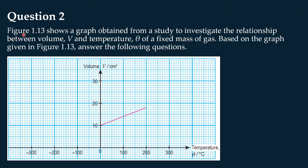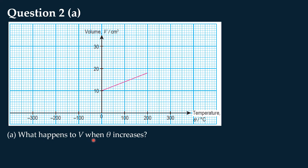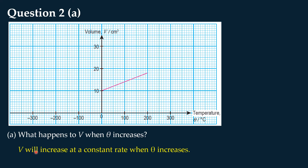Question 2: The graph shows the relationship between volume V and temperature theta of a fixed mass of gas. Question 2a: What happens to V when theta increases? The graph is a straight line, meaning V changes at a constant rate. We can also see that as temperature theta increases, the volume also increases. Therefore, V increases at a constant rate when theta increases.